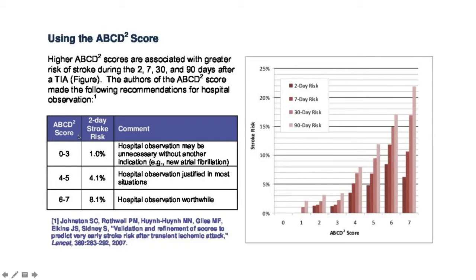These are recommendations based on the score that you get. A score of 0 to 3: hospital observation may be unnecessary without another indication, for example new atrial fibrillation. A score of 4 to 5: hospital observation is justified in most situations. A score of 6 to 7: hospital observation is worthwhile, because the 2-day stroke risk is about 8.1%. I think that's all I have for you. Thank you.